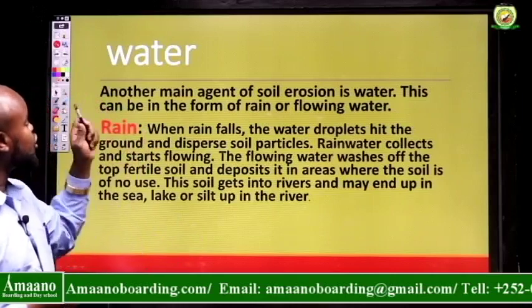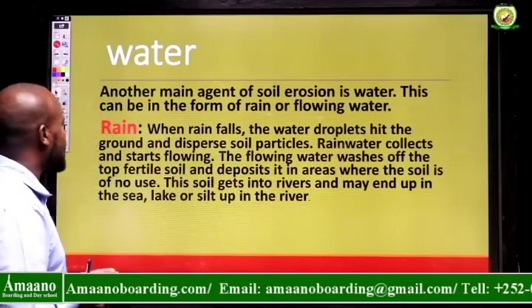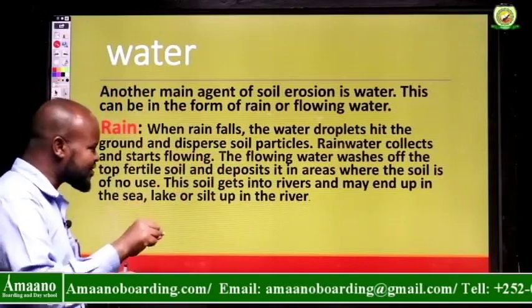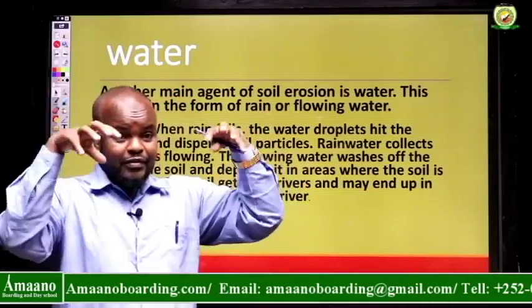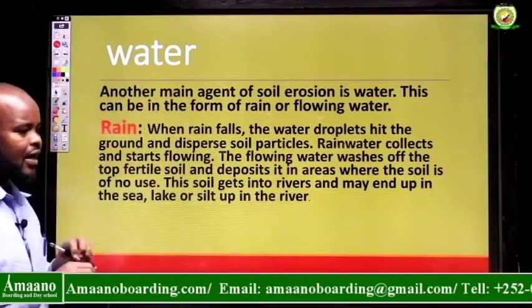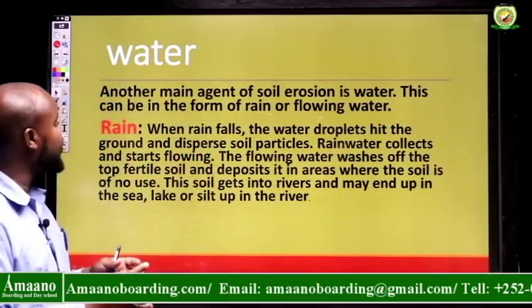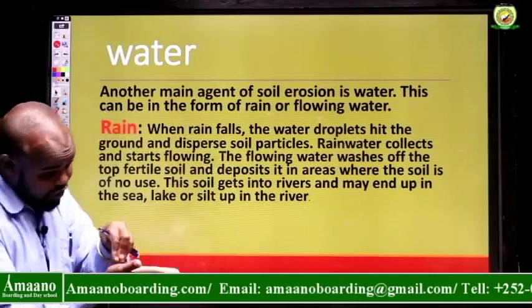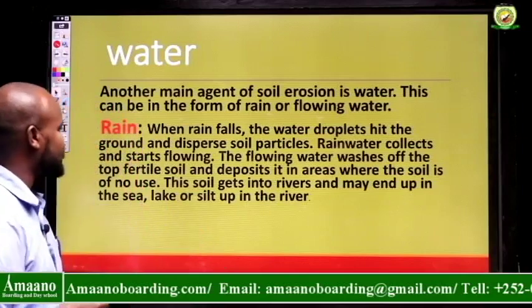Another main agent of soil erosion is water, which can be in the form of rain or flowing water. When it rains very heavily — heavy downpours — the strong water droplets hit the ground and split the soil particles apart. Rainwater then collects and starts flowing, and that flowing water washes off the top broken fertile soil, carrying it away.